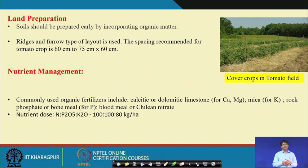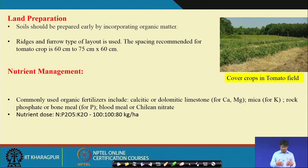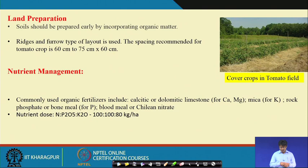For nutrient management in tomato, the dose is around 100 kg N, 180 kg P₂O₅, and 80 kg K₂O per hectare. Phosphorus is especially important for fruit setting and fruit development. Calculation of organic sources is the same as discussed — based on your chosen nutrient source, calculate how much organic fertilizer is required. Sources include calcite/dolomite for calcium and magnesium, mica for potash, rock phosphate or bone meal for phosphorus, and blood meal or gelatin nitrate for nitrogen.